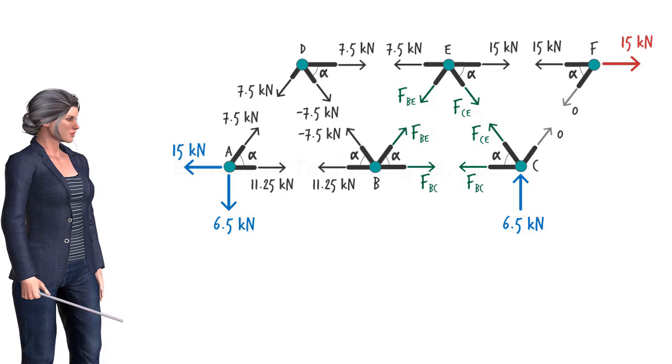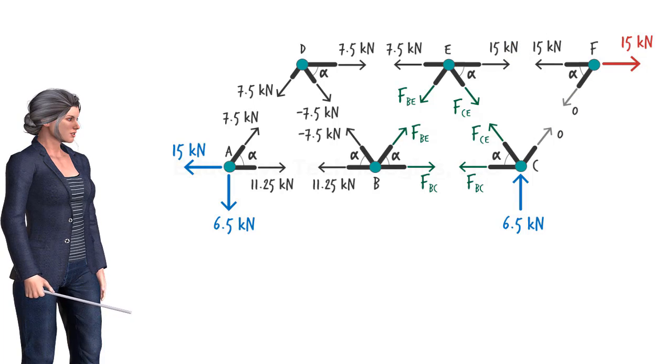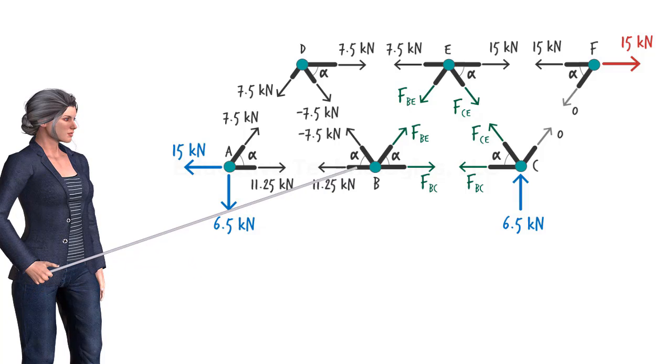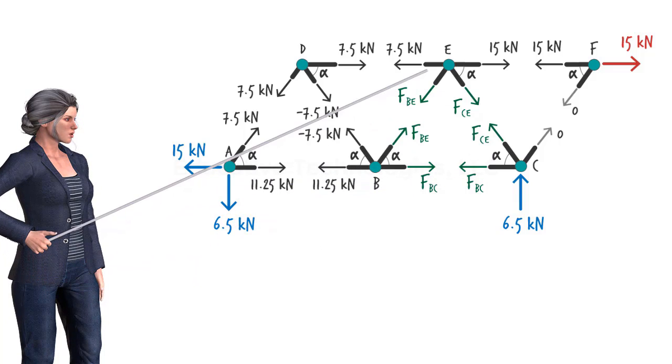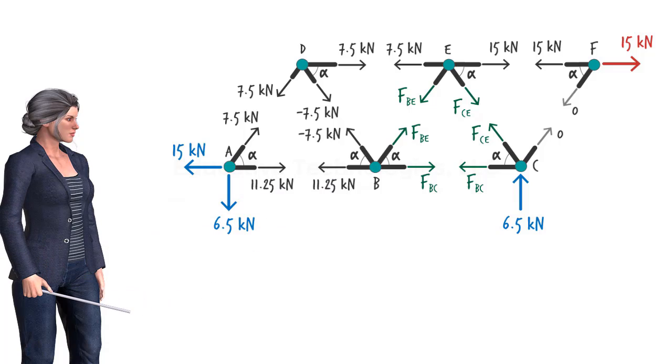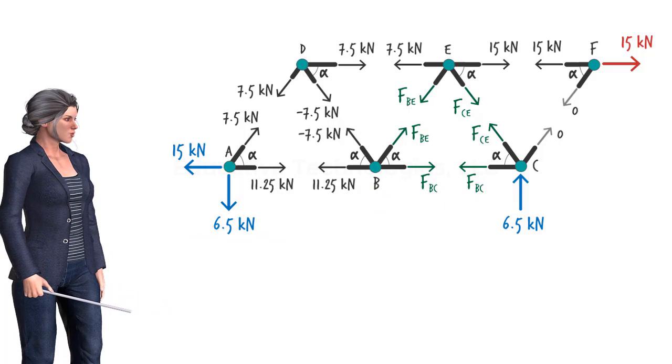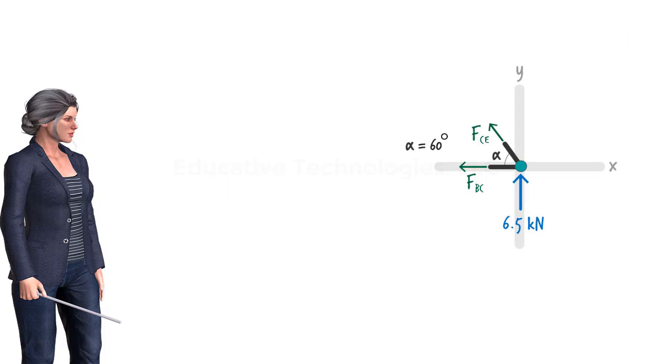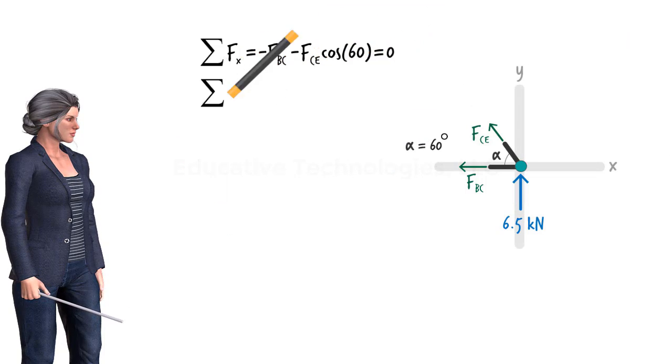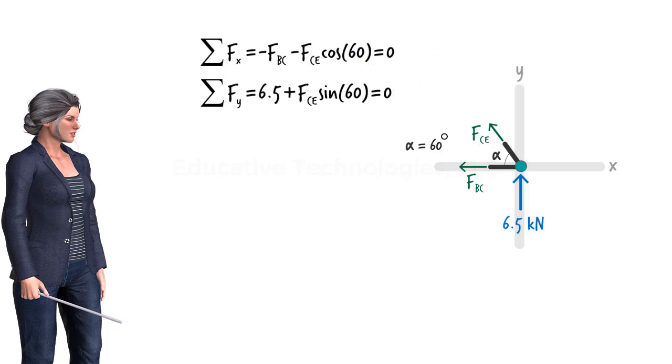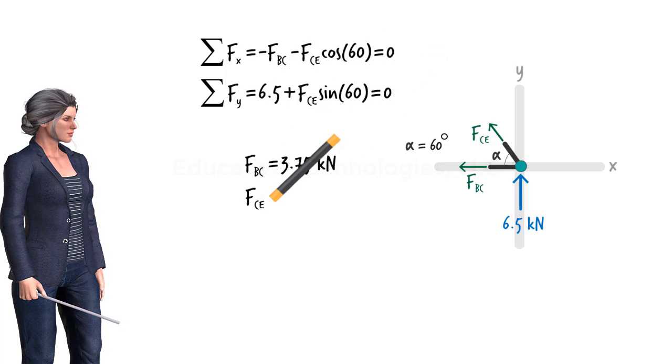Now, each remaining joint shows only two unknown forces. We can use either joint B, C, or E to determine two more forces. I'm going to use joint C to calculate FCE and FBC. The equilibrium equations for the joint are... Solving them for the unknowns we get...